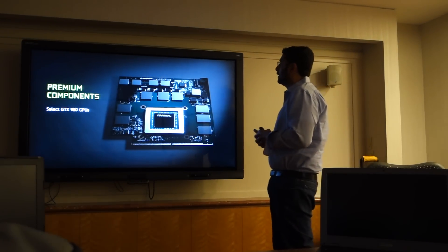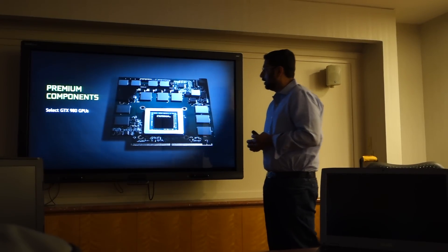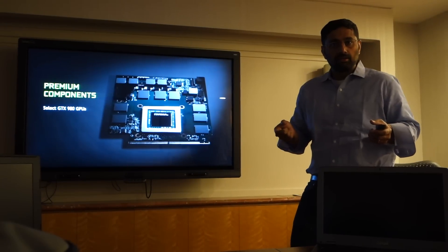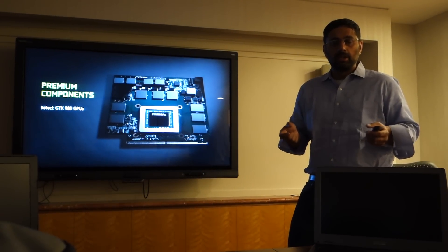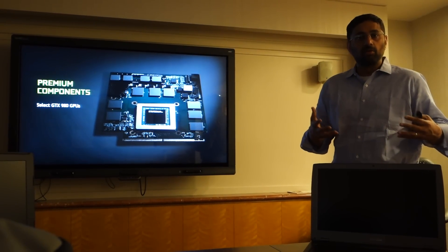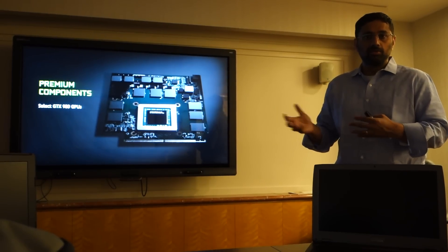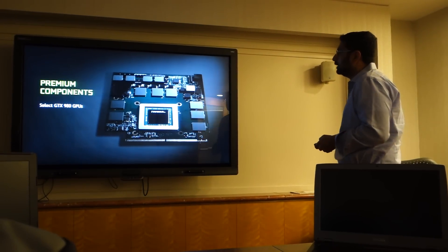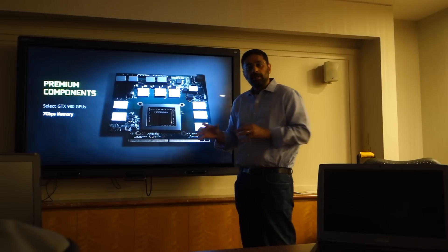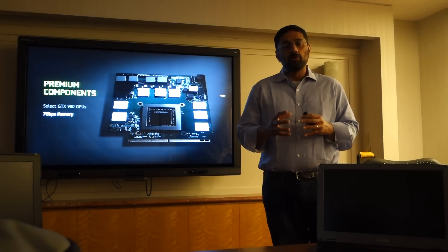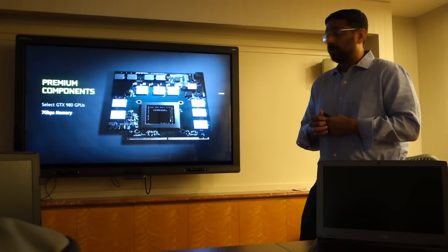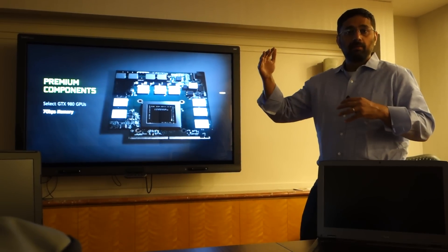Let's talk about components a little bit, starting with the GPU. Notebooks are constrained thermally, which usually constrains their performance. Not every GTX 980 GPU can deliver that class of performance in a notebook, so we've used select GTX 980 GPUs in these notebooks. The fastest memory on a notebook before this was 5 gigabits per second. These notebooks come with 7 gigabits per second memory—a big bump up.